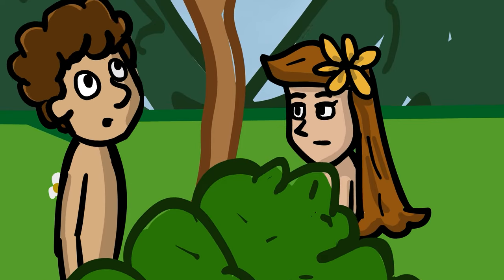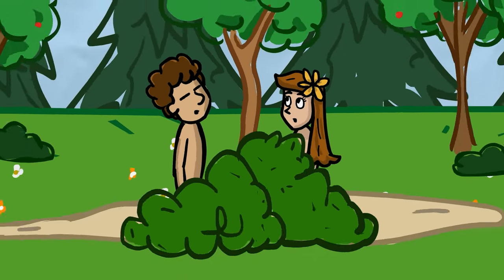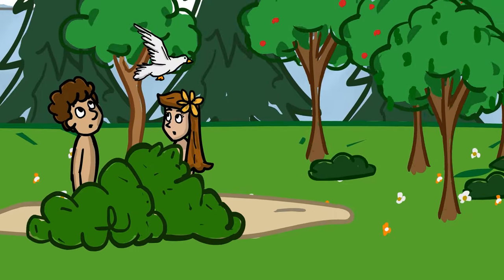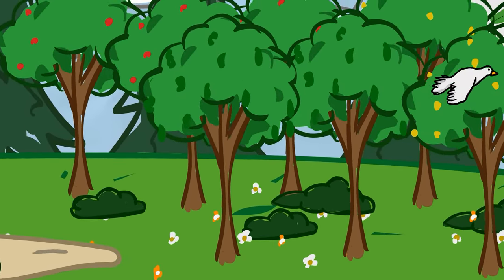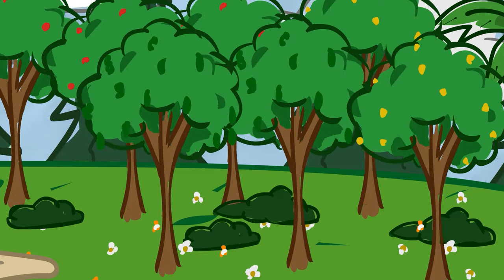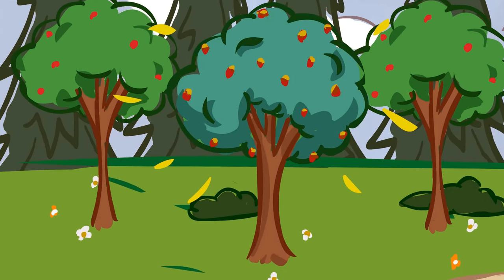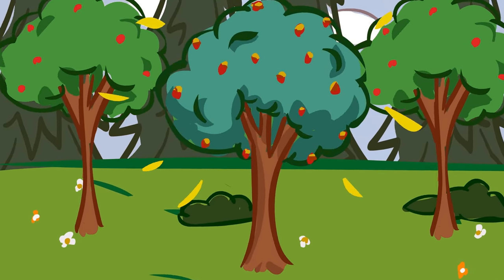Then God blessed them and gave them a task, saying, I have given you all the plants on this earth and all the trees with fruits so you can eat. And I gave you every green plant so your animals can eat. But do not eat the fruit from this tree. Don't eat it because you will die.